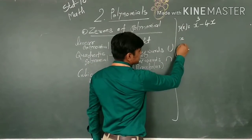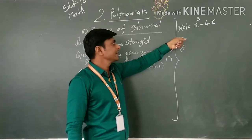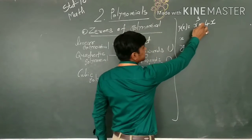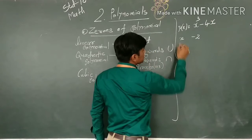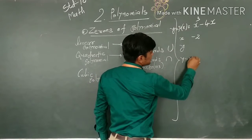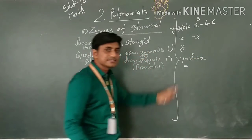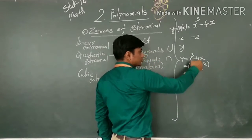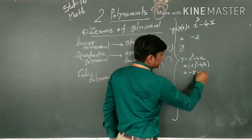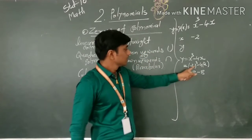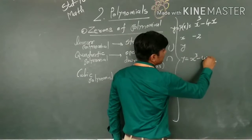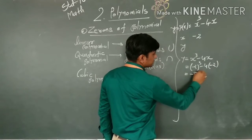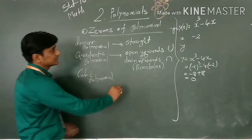Now we obtain some values of y corresponding to values of x. Suppose we take x = −2. Then, putting x = −2 into the polynomial y = x³ − 4x, we get: (−2)³ − 4(−2) = −8 + 8 = 0. So the corresponding value of y is 0.